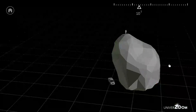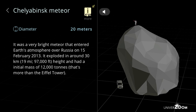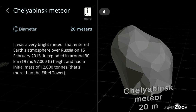Chelyabinsk meteor, diameter: 20 meters. It was a very bright meteor that entered Earth's atmosphere over Russia on the 15th of February 2013. It exploded at around 30 kilometers, 19 miles, 97,000 feet height and had an initial mass of 12,000 tons. That's more than the Eiffel Tower.